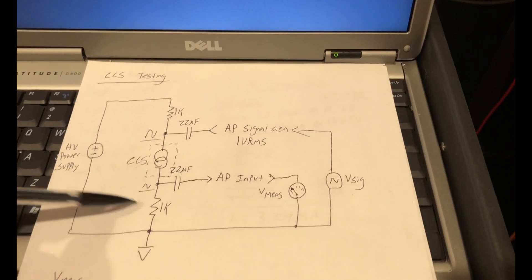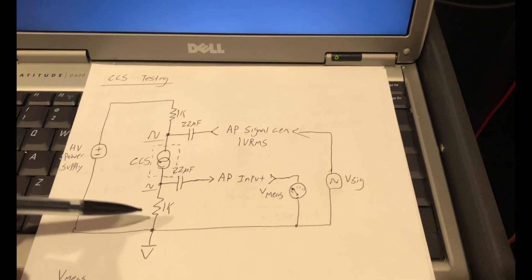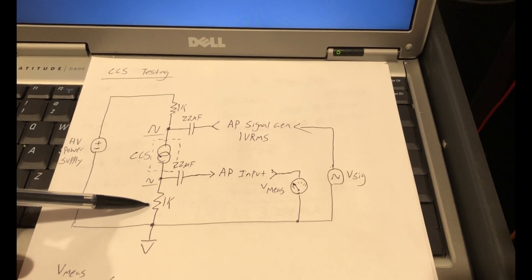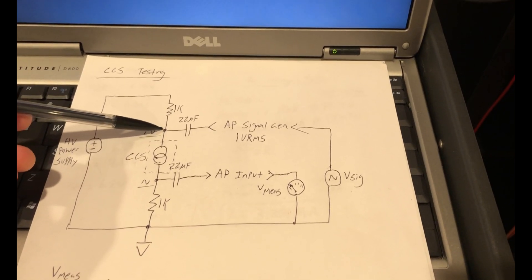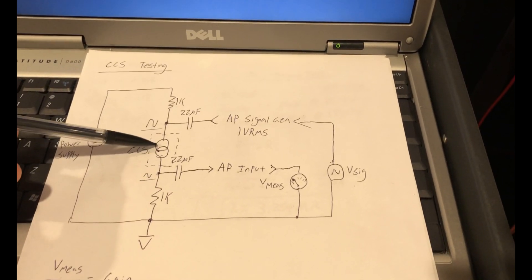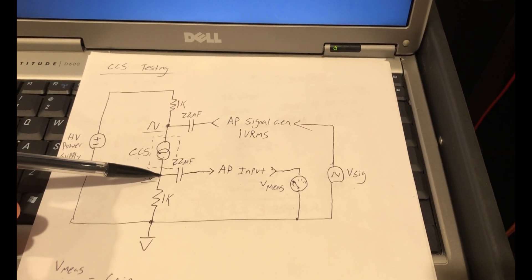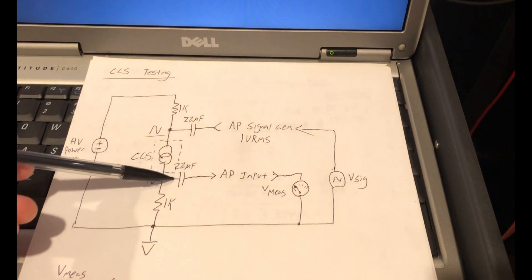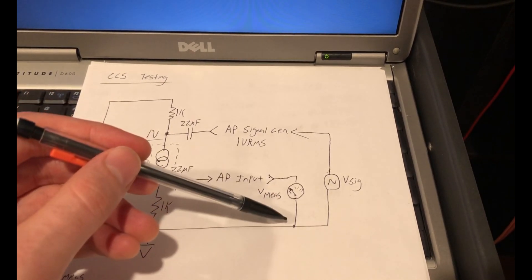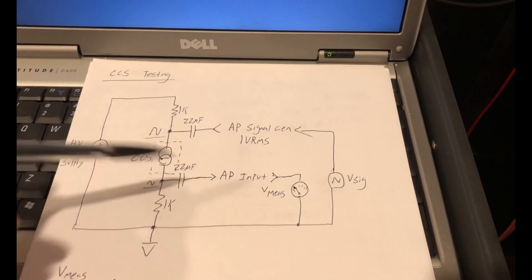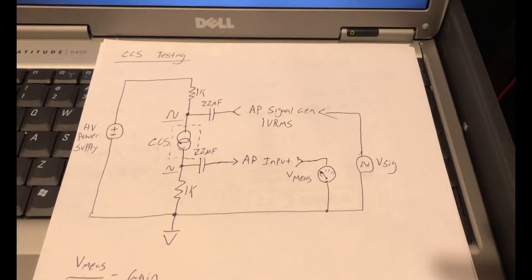On the low side, our goal is to create a voltage divider between the constant current source impedance and this 1k ohm lower resistor. So if our audio precision test signal appears on this node, based on the impedance of the constant current source, we'll get a smaller divided signal on this node. And again, I'm using another 22 microfarad cap to isolate this node and then measure just the AC signal into our audio precision. And I've already run some tests around this and it works extremely well.